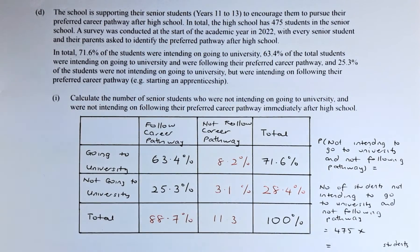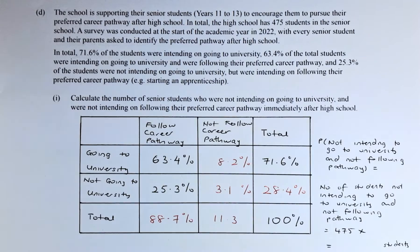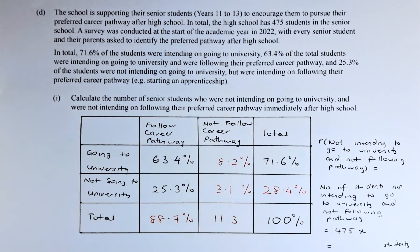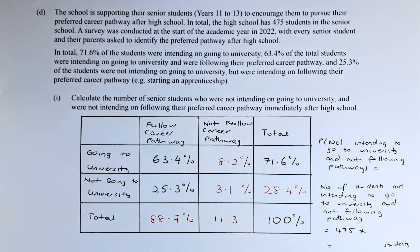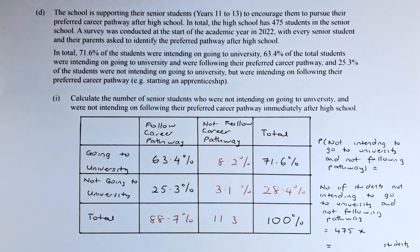The school is supporting their senior students, year 11 to 13, to encourage them to pursue their preferred pathway after high school. In total, the high school has 475 students in the senior school. A survey was conducted at the start of the academic year in 2022 with every senior student and their parents asked to identify the preferred pathway after high school. In total, 71.6% of students were intending to go to university.